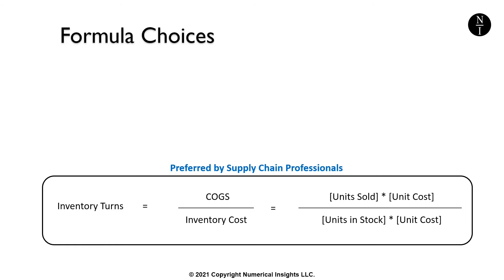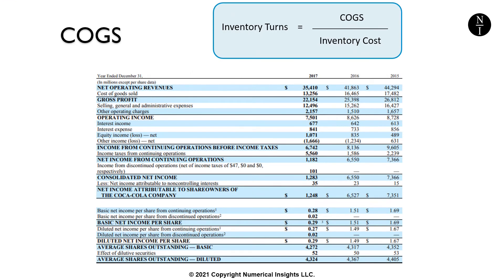While the formula looks simple, there are a few important details you need to know about when determining the values for the cost of goods sold and inventory for this formula. Let's start with the cost of goods sold. We can just pull this off the financial statements, right? When it comes to the most appropriate cost of goods sold value for the purpose of measuring the speed of inventory movement, it's not that simple. I'll show you why.